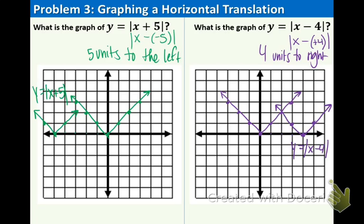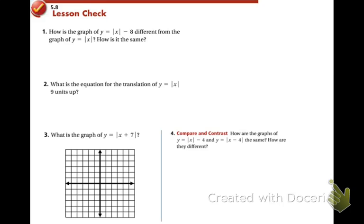How can you check that your graph is correct? You can use the equation to check the points on the graph — make sure the points are valid solutions for the equation, and then you know the points actually work and you have the right graph. Also, if you ever see Absolute Value of X with a negative number in front of the symbols, you know the function is going to be flipped upside down — it'll be an upside-down V. Feel free to try this lesson check now, or make sure you did the 5.7 lesson check — we're almost done with this chapter. See you soon.